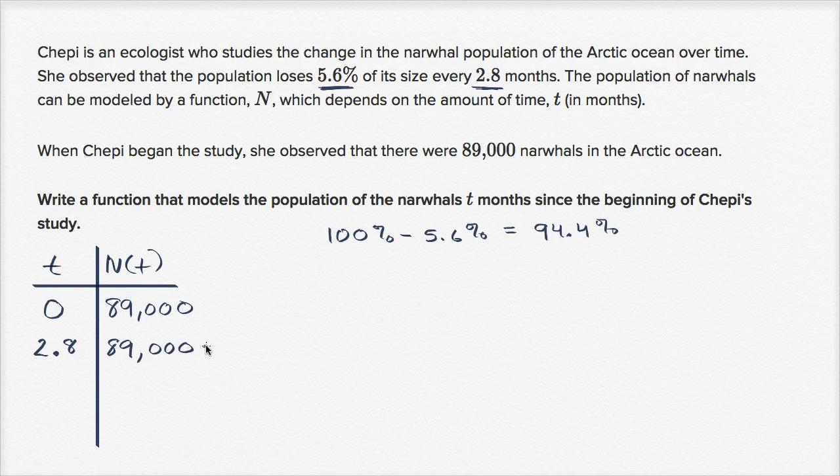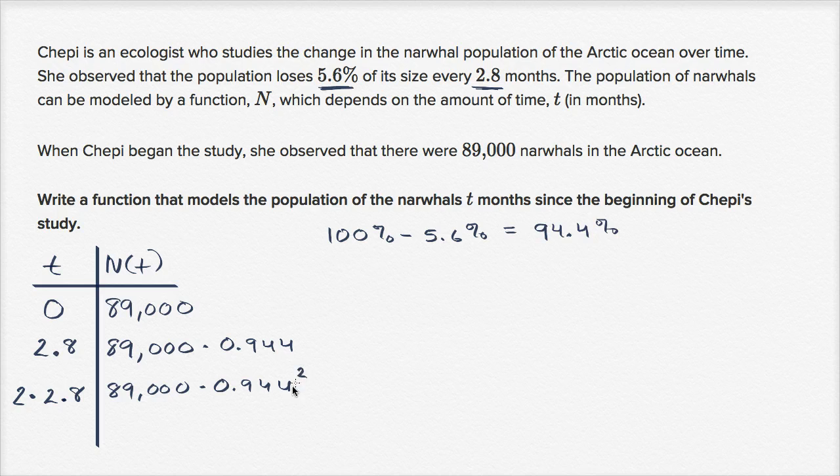So after 2.8 months, the population should be 89,000 times 0.944. Now if we go another 2.8 months, so 2 times 2.8, where are we going to be? We're going to be at 89,000 times 0.944. This is where we were before at the beginning of this period. And we're going to be 94.4% of that. So we're going to multiply by 0.944 again. Or we can just say times 0.944 squared.